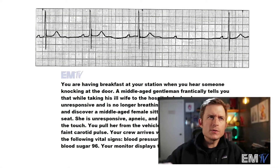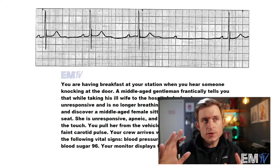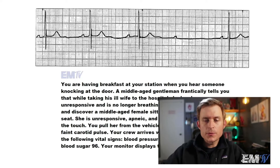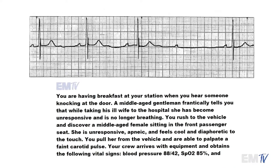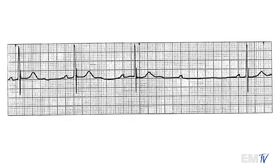This card has definitely been known to throw off my students, so let's take a look at the rhythm first and see if we can make an identification. One of the first things that should jump out at you is the speed — this is going about 40 beats per minute. The next thing you may have noticed right off the bat is the fact that you have this gap here.